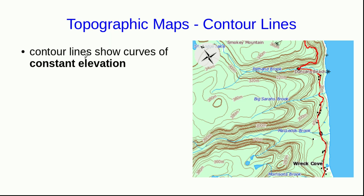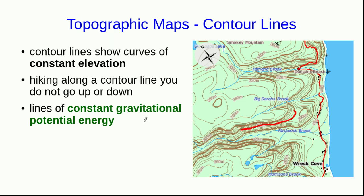So a contour line on a map shows a curve of constant elevation. In other words, if I were to start somewhere on this line, which is labeled 200 meters, and hike along it, then I would be hiking at a constant 200 meter elevation. I would not be going uphill or downhill as long as I followed the contour line. That means that these are lines of constant gravitational potential energy because I do not go up or down as I hike on this line. My gravitational potential energy doesn't change as I do this hike.